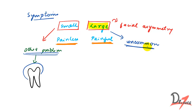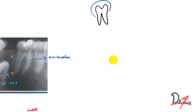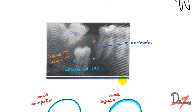Large dentigerous cysts are very rare. There will be times when in a radiograph you'll feel it's a large dentigerous cyst, but on further investigation you'll find it is an odontogenic cyst or ameloblastoma. To summarize: age 10 to 30 years, male, white, mostly in the third molar, could be small or large, painless or painful.